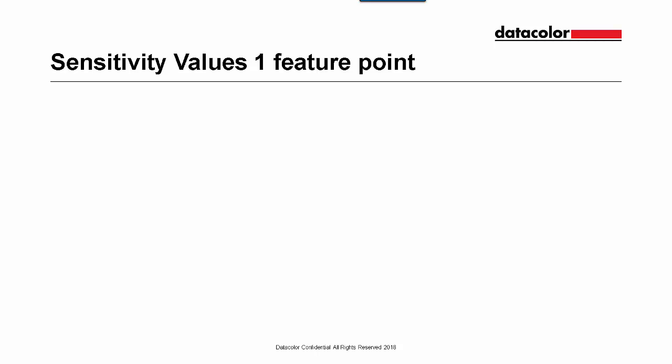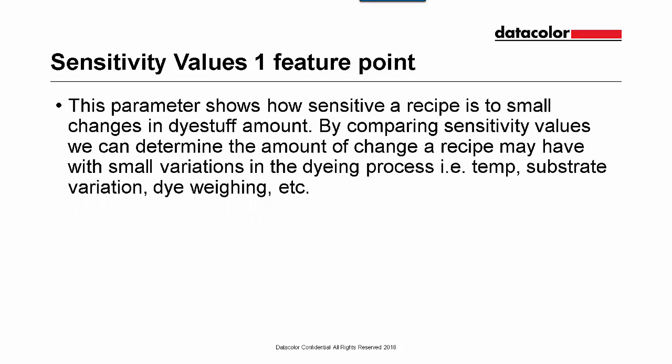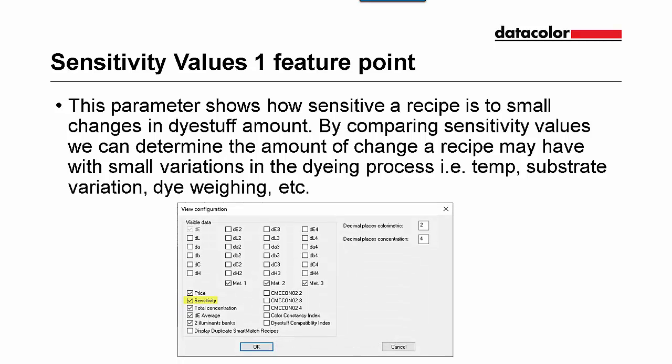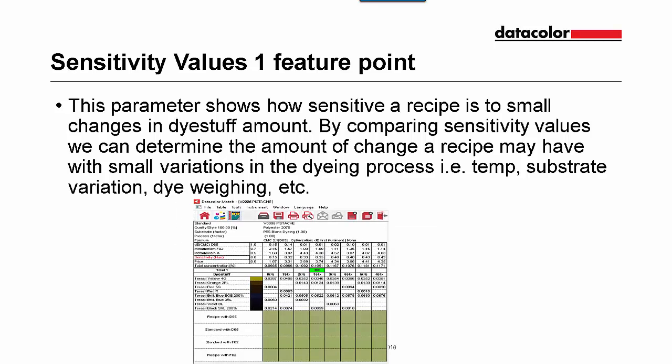Sensitivity values is an option worth one feature point. It shows how sensitive a recipe is to small changes in dye stuff amount. By comparing sensitivity values, we can determine the amount of recipe change with small variations in dyeing, such as temperature, substrate variation, and dye weighing. Sensitivity is turned on on the configuration page for the recipe table. The recipe table can be viewed and sorted on how sensitive a particular dye combination is.